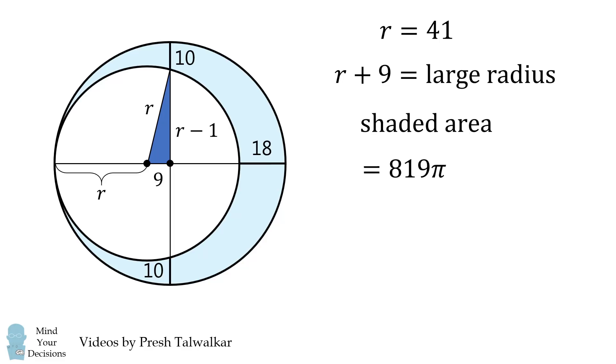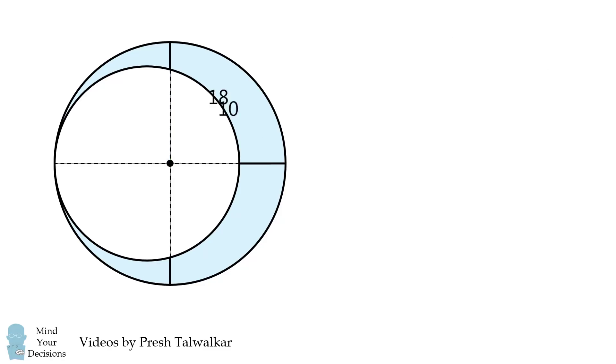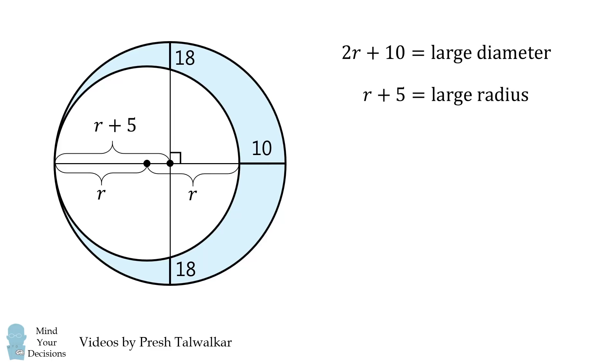So now, what about the original problem where the distances of 10 and 18 were swapped? Well, you could go about it exactly in the same method as we just did. Let's let R be the radius of the small circle, and then we'll calculate the distance between the centers of the two circles. In this case, it works out to be 5.